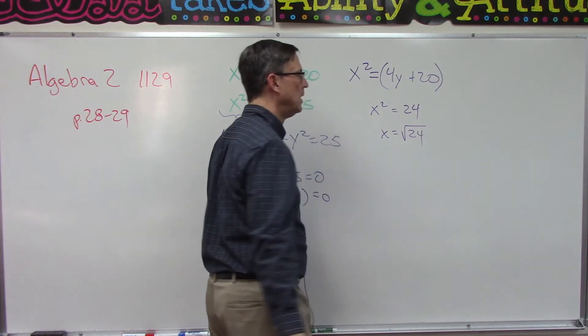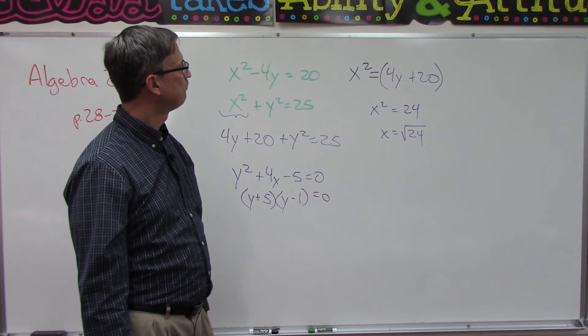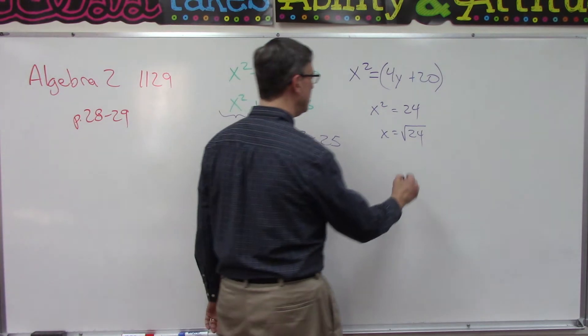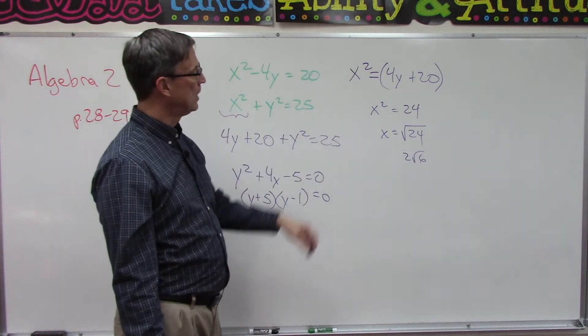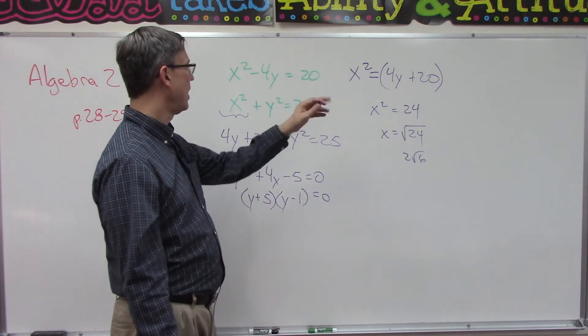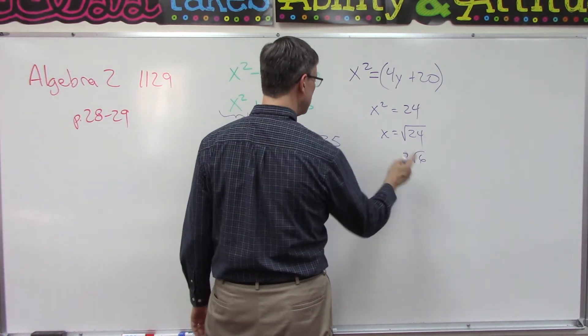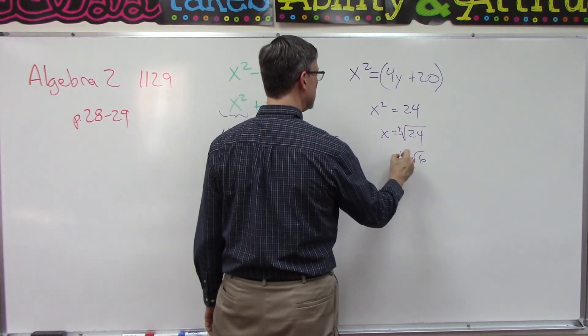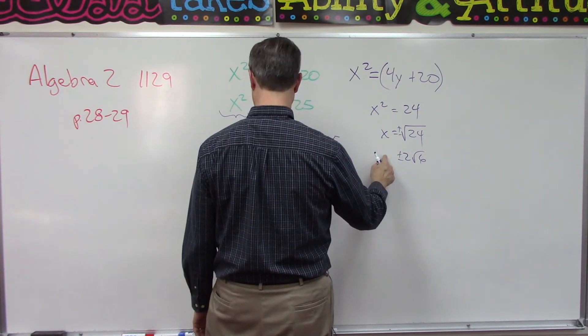Which means x equals the square root of 24, and you can simplify that by pulling out, what would it be, four times six. So pull out the two, you know, two square root of six, or you can use your calculator and get a decimal answer. Okay, and then you'll do the same by plugging in the negative 5. So what that means is you're going to get four answers here because this is plus or minus.